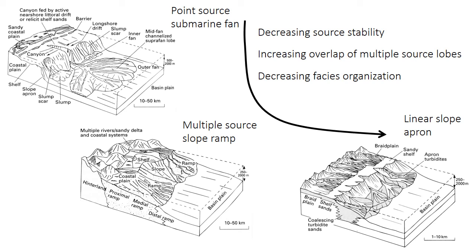The main point here is to consider how the nature of the source can affect the organization of the fan. The source can vary from a single point to multiple spaced points, and finally to something approximating a continuous line of sediment called a linear slope apron. Along this gradient, source stability decreases. In a point source, sediment always comes from the same place, but in a slope apron it can come from many places shifting in time and space. As the number of sources increases, there is increasing overlap of the resulting lobes, and so the facies in a vertical succession tend to be less organized, with more irregular sedimentation.